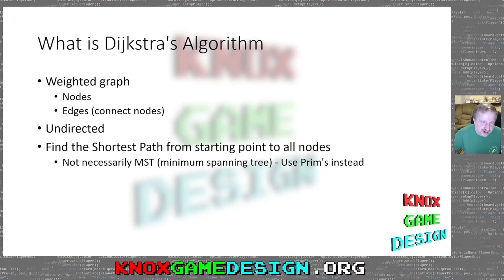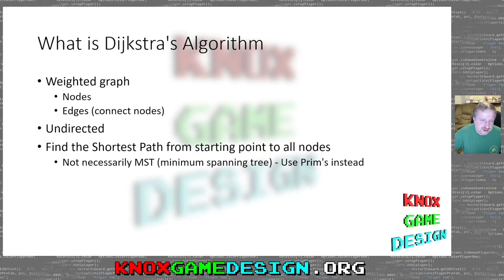We're going to be talking about an undirected graph, so the distance from node A to node B is the same as from node B back to node A. There may be cases with a directed graph, but here we're just talking about undirected. And as mentioned, for any node on your graph, you'll be able to find the shortest path to all the other nodes.